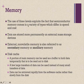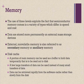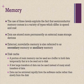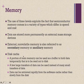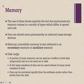Semiconductor memory comes in a variety of types which differ in speed and cost. We use three levels to exploit this characteristic — data that needs to be permanently stored is kept in external memory, also referred to as secondary memory or auxiliary memory. There is also the concept of disk cache.